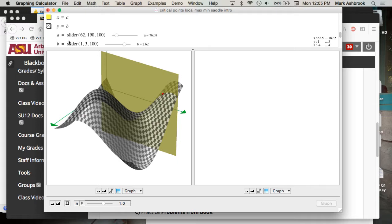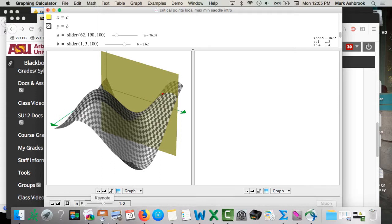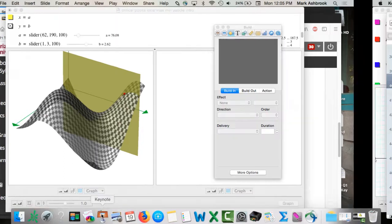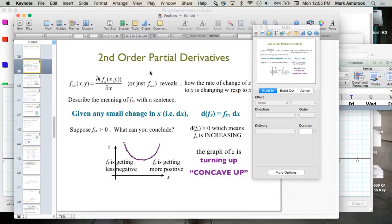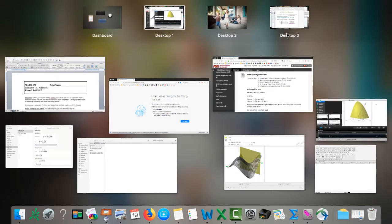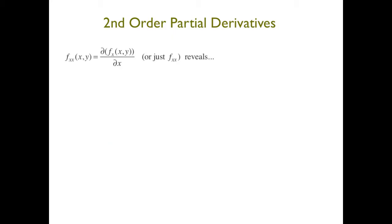Now let's talk formally about the second partial derivative. The second partial with respect to x, f_xx, is found by taking the partial with respect to x — which is itself a multivariable function — and taking its partial derivative with respect to x again. That reveals how the rate of change of z with respect to x is itself changing with respect to x.